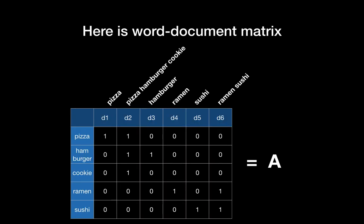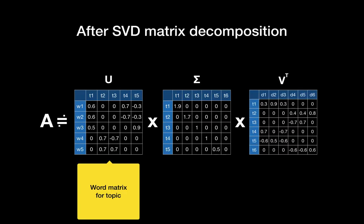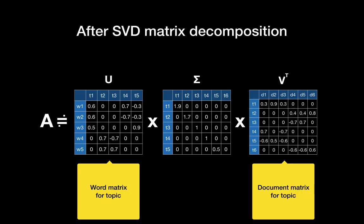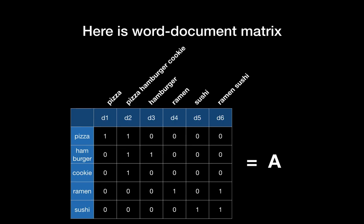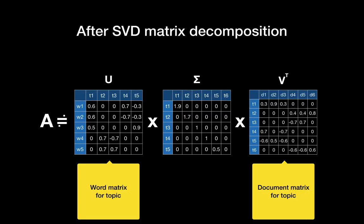Here is the menu again and I made a word-document matrix. You can see here every row is a word and the columns are the documents. Since every row is a word, if you do SVD, the singular vector decomposition, the U matrix will be the word matrix for the topic and the V transpose will be the document matrix for topic. The sigma matrix is the topic strengths.